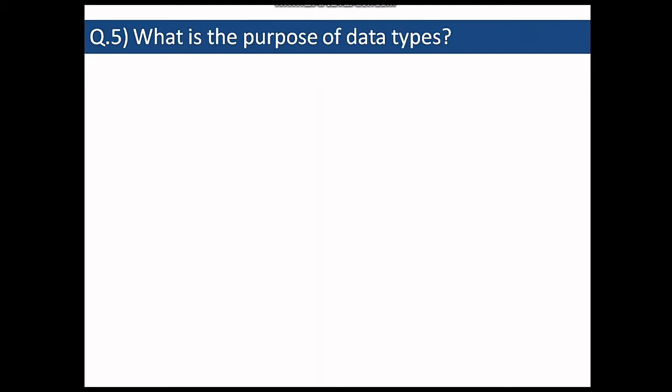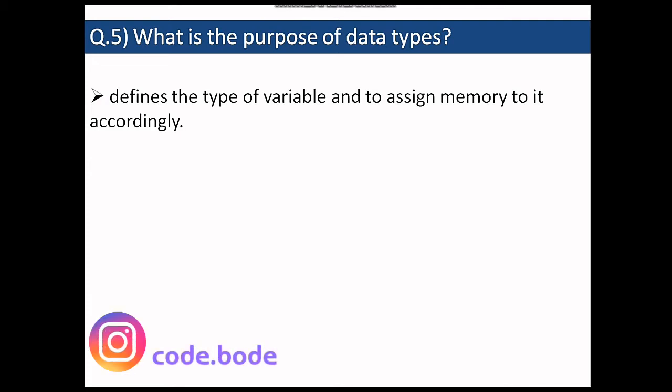What is the purpose of data type? So why do we have to write a data type before a variable? So that is because data type defines the type of a variable and assigns memory to it accordingly. Because compiler wants to know how much memory should be assigned to a variable because we don't want to assign a lot of memory for a small integer or a small character. That is why it is important to tell the compiler what type of a variable you are going to use for your operations.